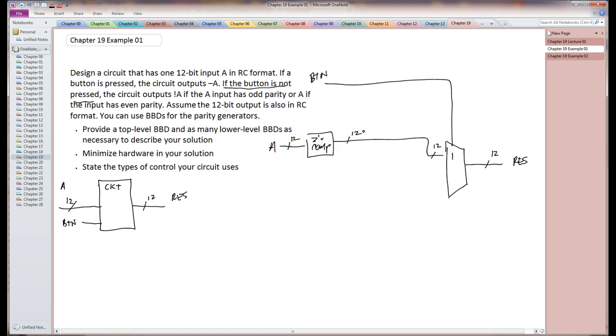So if the button is not pressed, it outputs one of two things, which is again another MUX. And so we will put that MUX in there and we'll look at those two things that it's outputting. And one is a complemented A and the other is just A. So we can put that in here.